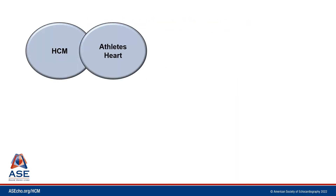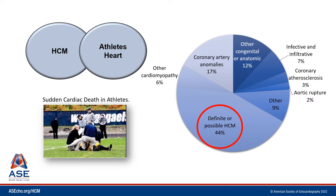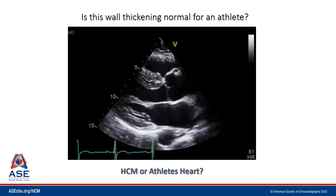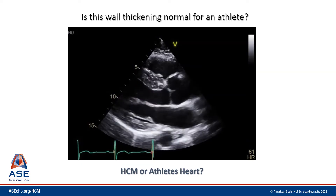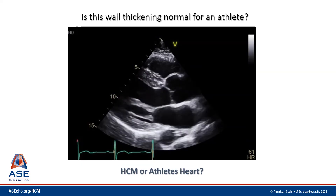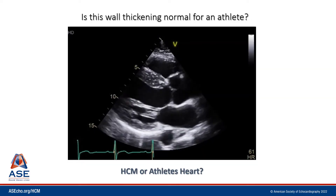It's very important that we are able to make this differentiation, as we know from data recording sudden cardiac death in athletes that hypertrophic cardiomyopathy may be one of the most common causes of sudden cardiac death. Thankfully, it's usually very easy to differentiate the two, but that's not always the case — sometimes we have cases like this professional athlete where there is concern for hypertrophic cardiomyopathy, and it really is a challenge.